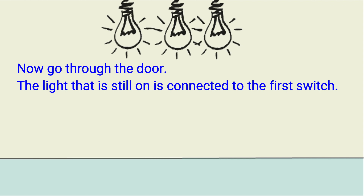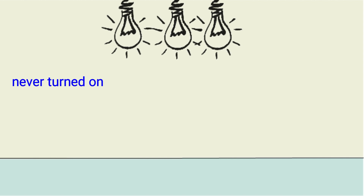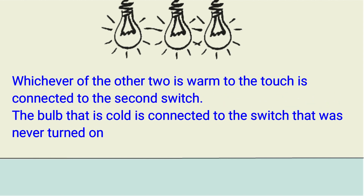The light that is still on is connected to the first switch. Whichever of the other two is warm to the touch is connected to the second switch. The bulb that is cold is connected to the switch that was never turned on.